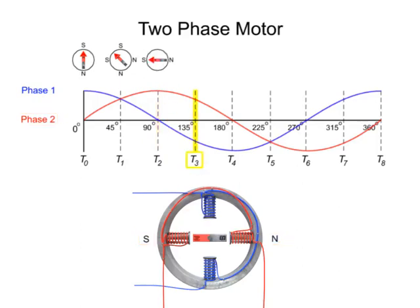At time 3, phase 2 has diminished current flow, while current flow through the vertical rotor coils increases and reverses direction. This causes the rotor to move another 45 degrees to the left.